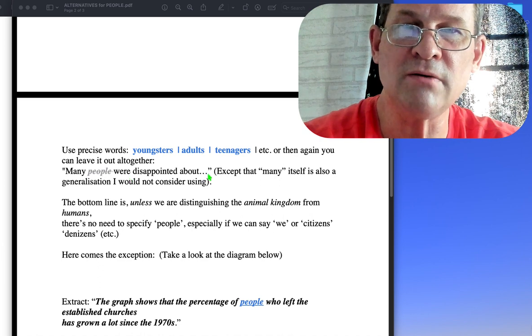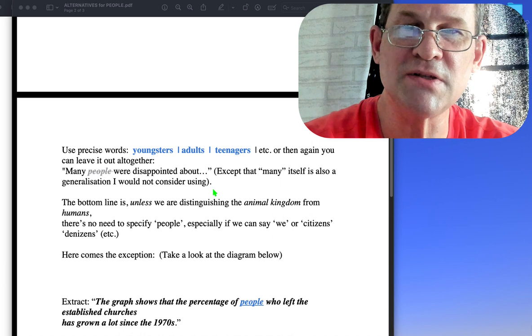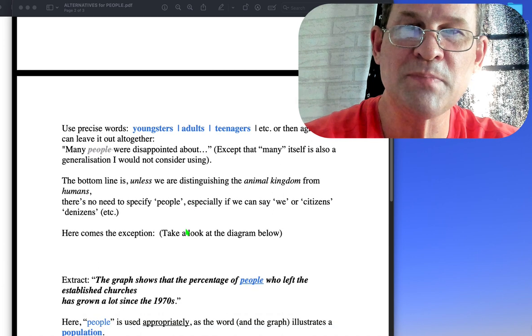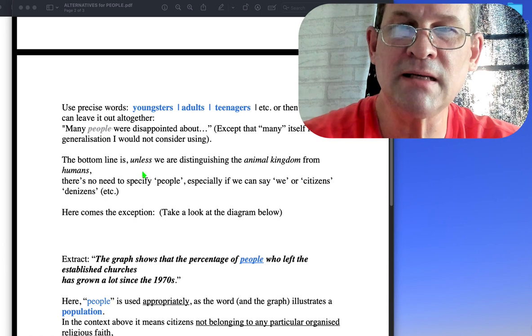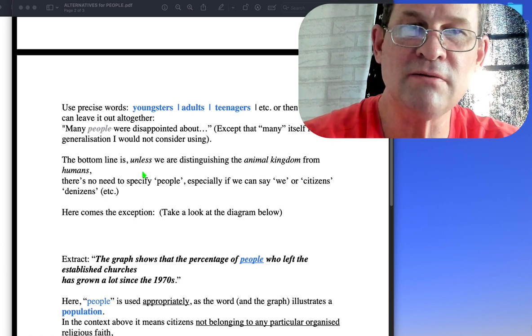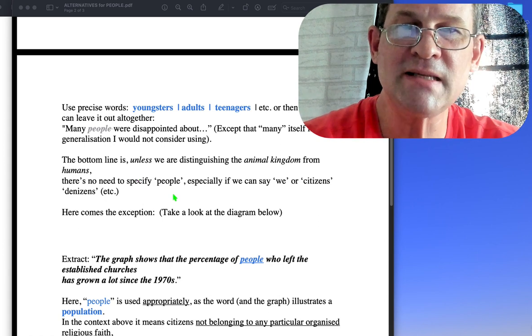Or then again, you can leave it out altogether. So 'many were disappointed' - except that many itself is also a generalization I would consider rephrasing. The bottom line is unless we are distinguishing the animal kingdom from humans, there's no need to specify people, especially if we can say we or citizens, denizens, etc.